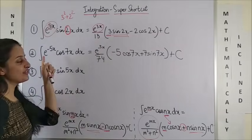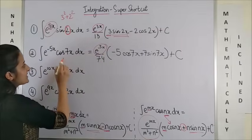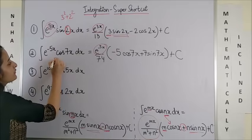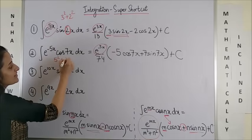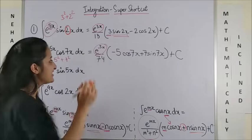Similarly, for the second one, you copy down e to the power minus 5x as it is. Upon, this is 5 square plus 7 square. That becomes 25 plus 49. That's 74.